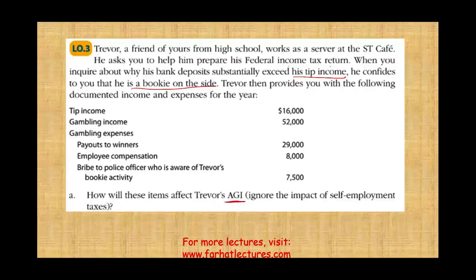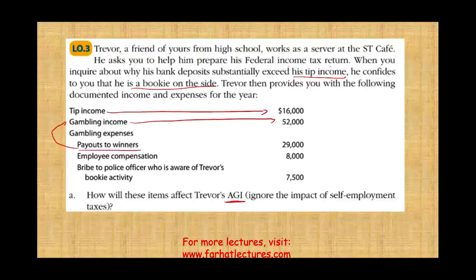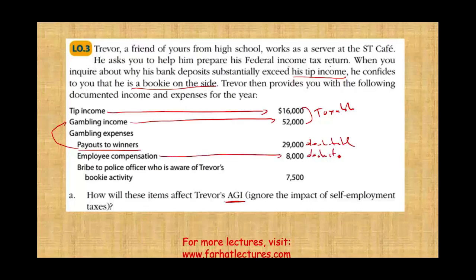Will these items affect Trevor's adjusted gross income? Ignore the impact of self-employment taxes. Tip income — can we include the tip income? Of course — tip income is included. Gambling income from his bookie activity — guess what? It's also included. Gambling expenses paid out to winners, $29,000 — that's deductible; those are operating expenses. Employee compensation — yes, that's also operating expenses and deductible.